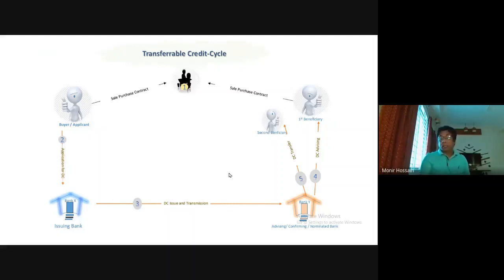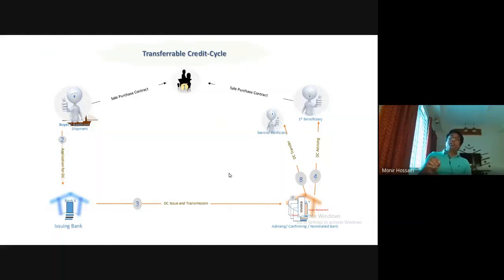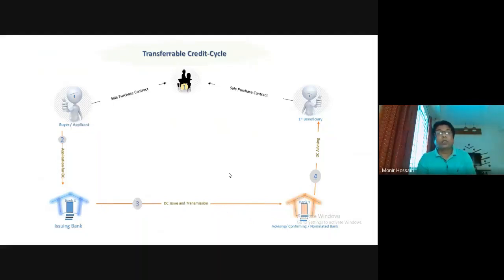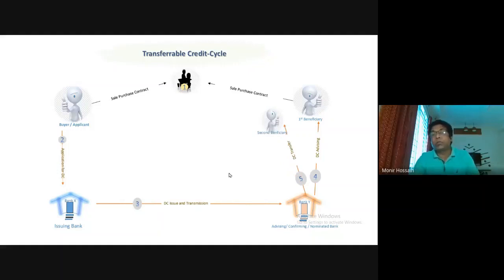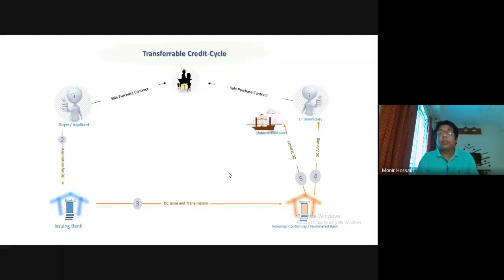Once the second beneficiary receives the transfer, the second beneficiary ships the goods and sends the documents to the nominated bank. The first beneficiary then changes its invoice. The nominated bank transfers the letter of credit, and the second beneficiary becomes the performer of the letter of credit. The second beneficiary procures and ships the goods and sends the documents to the nominated bank.